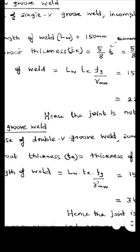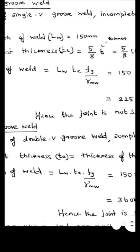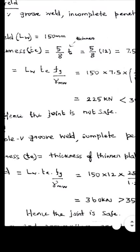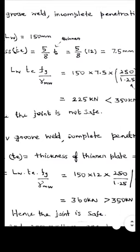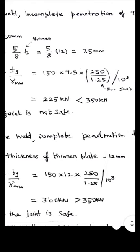Strength of the weld is area of the weld into stress in the weld. Area of the weld is obtained by length of the weld into throat thickness. Length of the weld is directly given as 150 mm. Throat thickness is 12 mm. Then yield strength of the parent metal used here 250, gamma MW is 1.25 because it is shop welded, divided by 10 power 3 to convert this value into kilo Newton.